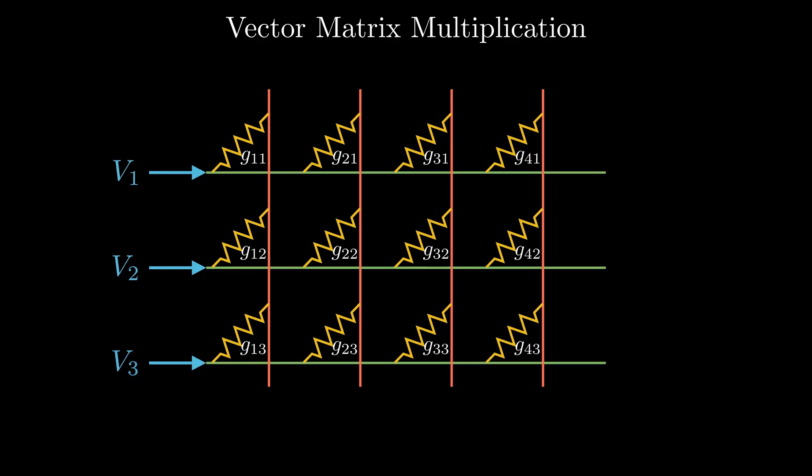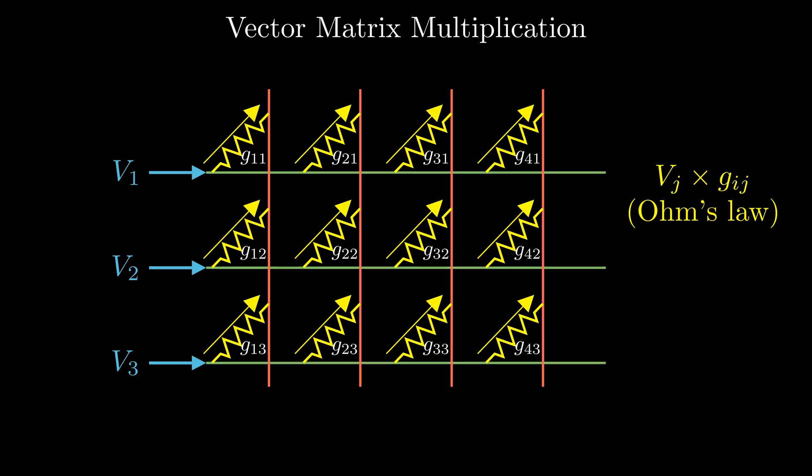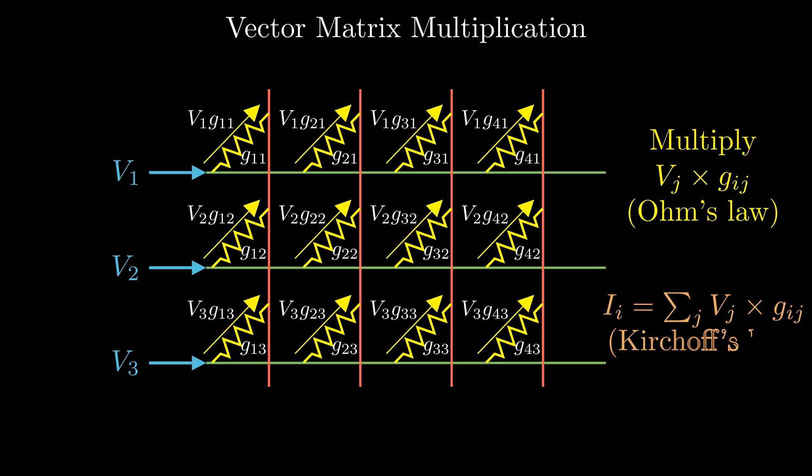The input vector is applied as voltages along the rows of the crossbar. Thanks to Ohm's law, the current through each memory cell is the product of the applied voltage and the cell's conductance. That's the multiply operation.